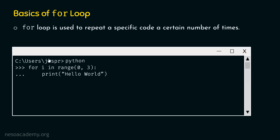Now let's understand how this for loop works. Here we have for i in range. We have this range function which receives two arguments, zero and three. The range function returns a sequence of numbers depending upon the arguments you provide. If the arguments are m and n, range function will return the sequence from m to n minus one. In this case, m is zero and n is three, so range function will return values zero, one, and two — not three, because the last value is always n minus one.